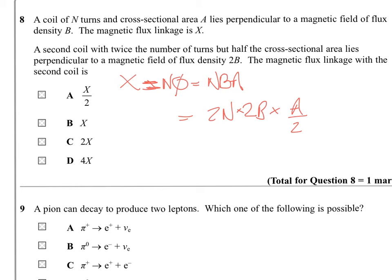And you can see that two of these twos are cancelling. So the overall outcome will be 2N B A and so it'll be 2X which was C.